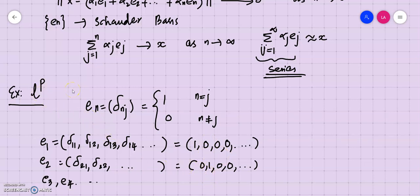This is an infinite collection of vectors — it is actually a sequence. The nth element of the sequence eₙ has 1 in the nth position and 0 in all other positions. This is what a particular example of a Schauder basis looks like in the case of ℓp.